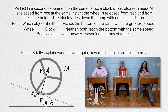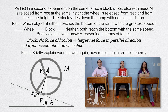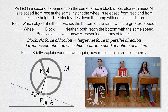For part C-i, the block has no force of friction acting on it, so the net force in the parallel direction on the block has a larger magnitude and therefore a larger acceleration down the incline. A larger acceleration results in a larger speed at the bottom of the incline, so the block has a larger speed at the bottom.